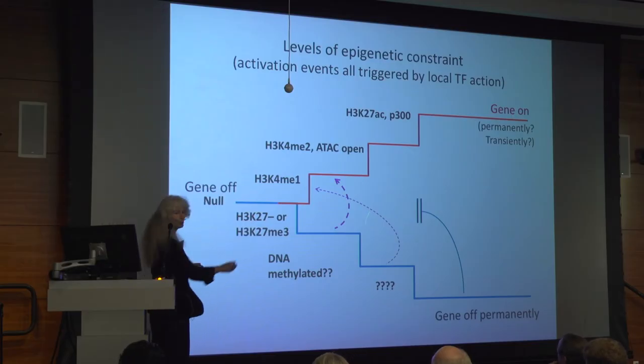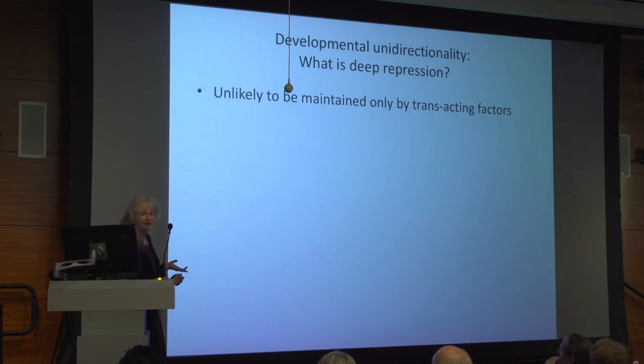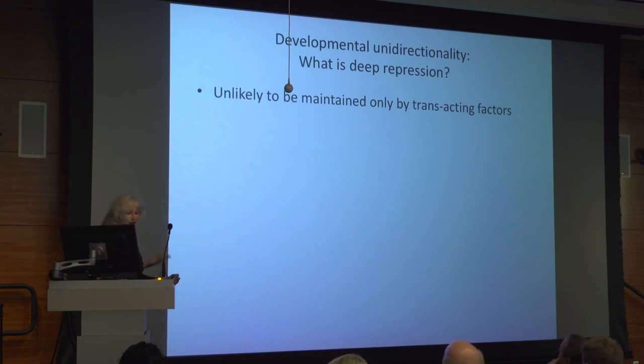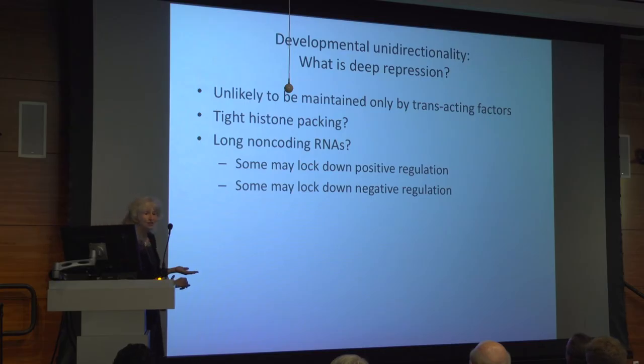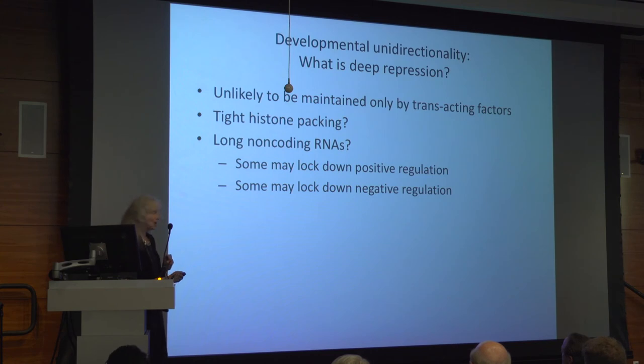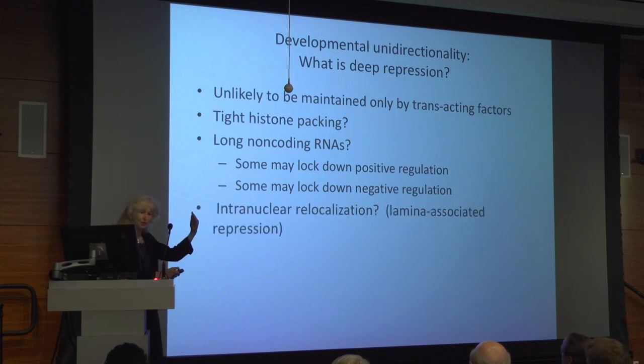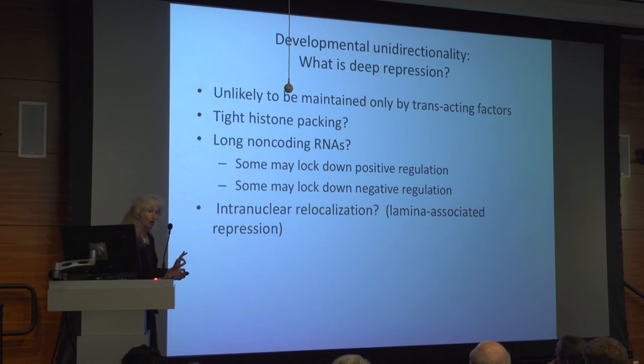A gene that's permanently off can never be turned on again. What are the possibilities? It's unlikely to be maintained only by trans-acting factors — the whole point about transcription factors is that they're meant to be working in different combinations dynamically. Is it tight histone packing? If so, how? What's the difference between this and just something that isn't currently active — we don't have a marker yet. Long non-coding RNAs are of great interest; they seem to work in cis, some locking down positive regulation, some negative. There's also the possibility of intranuclear relocalization — there's a nuclear lamina-associated repressive compartment. No one knows anything about how this localization is controlled, triggered, or maintained. This is obviously waiting to be studied.